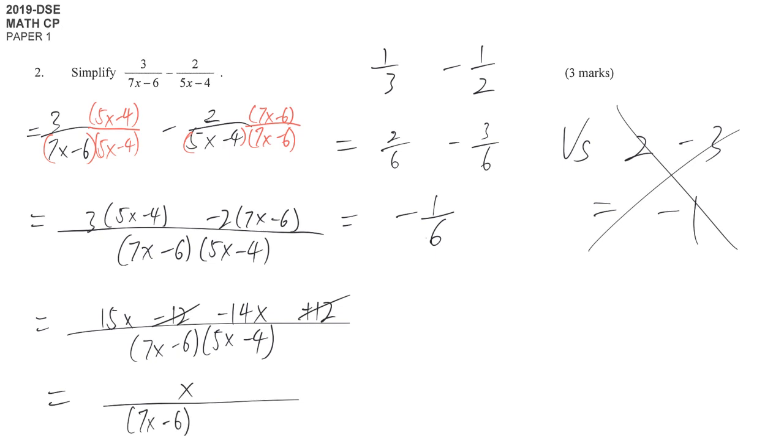And (7x minus 6) times (5x minus 4) below. Many students think that it's an equation and make some other changes. So the answer should be with a denominator, bracket (7x minus 6) times (5x minus 4).